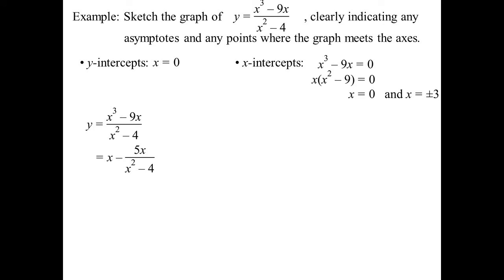So I do our polynomial division. I now know there'll be vertical asymptotes at plus or minus two. So I'll pop those in. And there'll be an oblique asymptote at Y equals X.